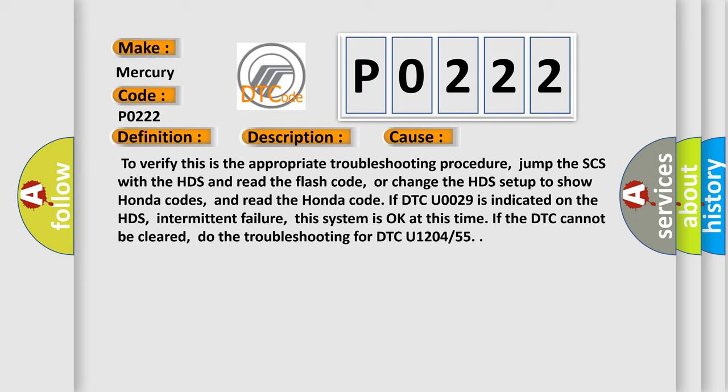If DTC U0029 is indicated on the HDS, to verify intermittent failure, this system is okay at this time. If the DTC cannot be cleared, do the troubleshooting for DTC U1204 or 55.